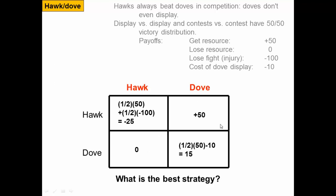We can construct a payoff matrix similar to the prisoner's dilemma. One individual can either be a hawk or a dove, and their opponent can be either a hawk or a dove. Conversely, that opponent is also either a hawk or a dove facing their own opponent who is either a hawk or a dove.